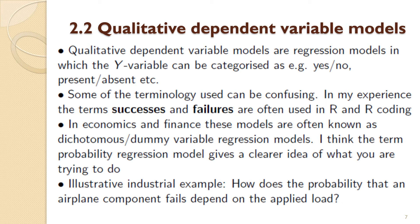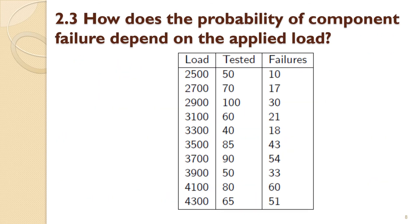As an illustrative example, consider an operations research problem: how does the probability that an airplane component fails depend on the applied load? It's obvious that the higher the load, the higher the probability of failure, but the precise numerical relationship is not automatic. The dataset for this example has the load in kilograms as the first column, the number of components tested as the second column, and the number of components that failed as the third column.